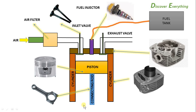The connecting rod connects to the crankshaft. In the cylinder head, the inlet and exhaust valves are fixed, and the fuel injector is fixed. Air enters through the inlet port, and exhaust exits through the exhaust port. The inlet port connects to the air filter pipeline, and the exhaust port connects to the silencer pipe line.